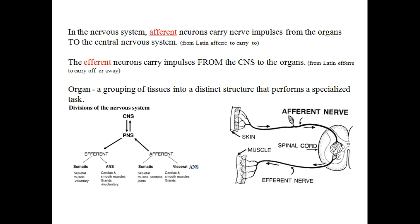In the nervous system, afferent neurons carry nerve impulses from the organs to the central nervous system. The efferent neurons carry impulses from the CNS to the organs or extremities. An organ is a grouping of tissues into distinct structures that perform a specialized task.